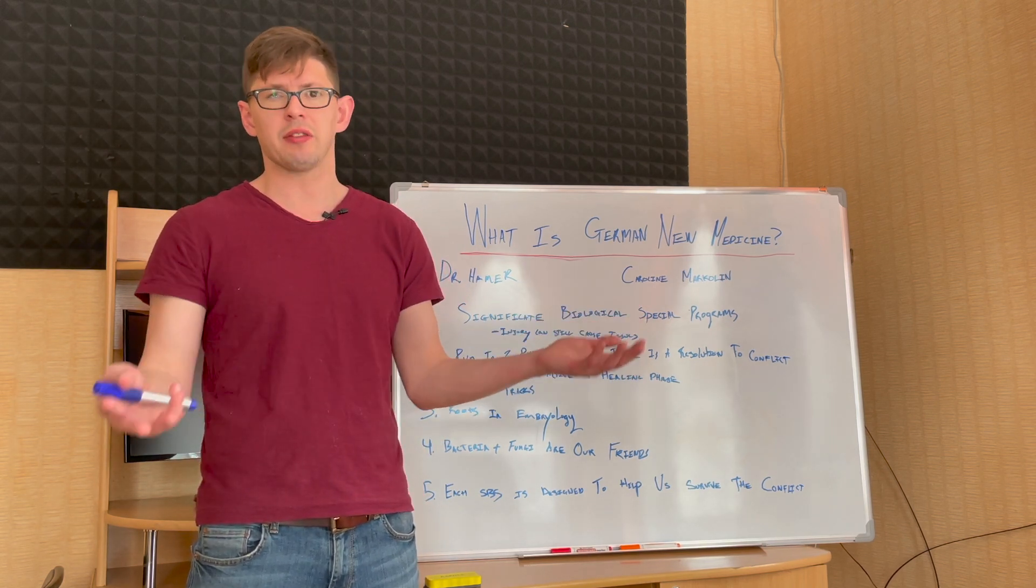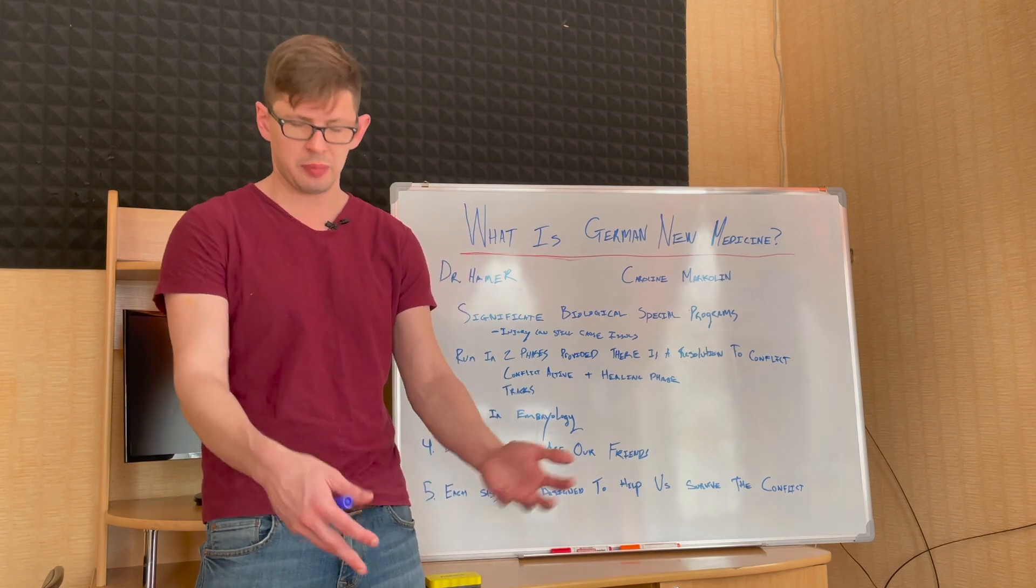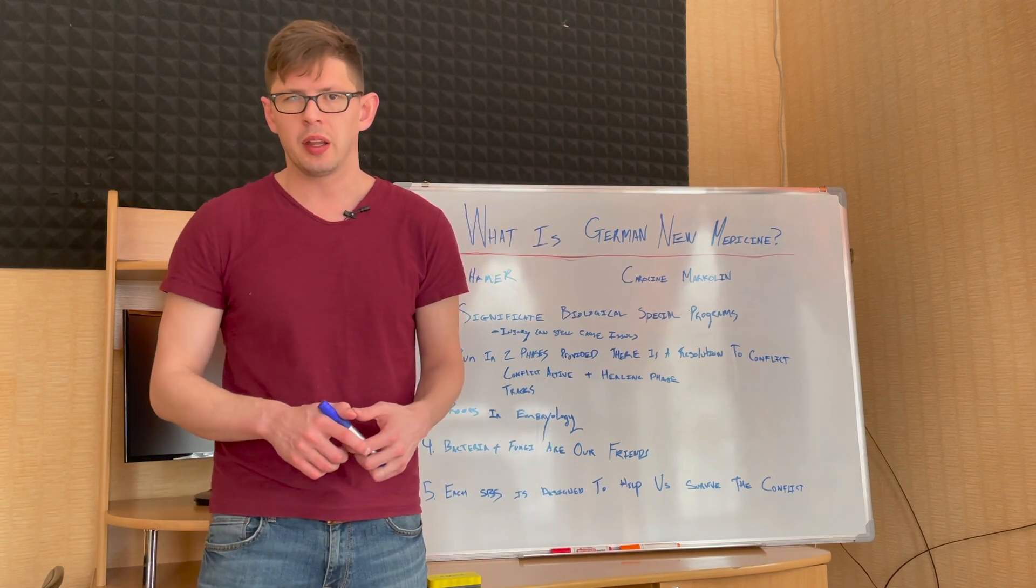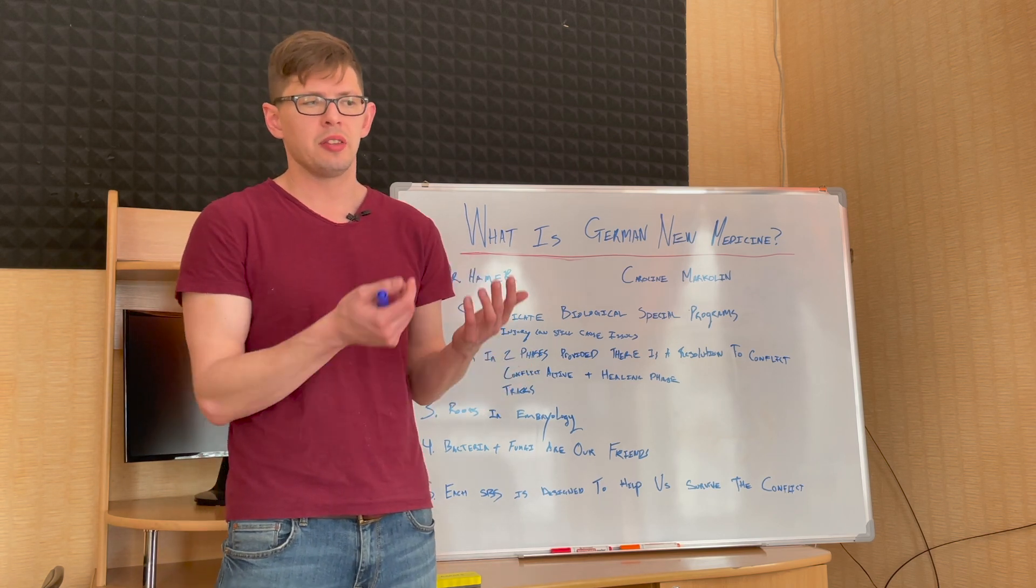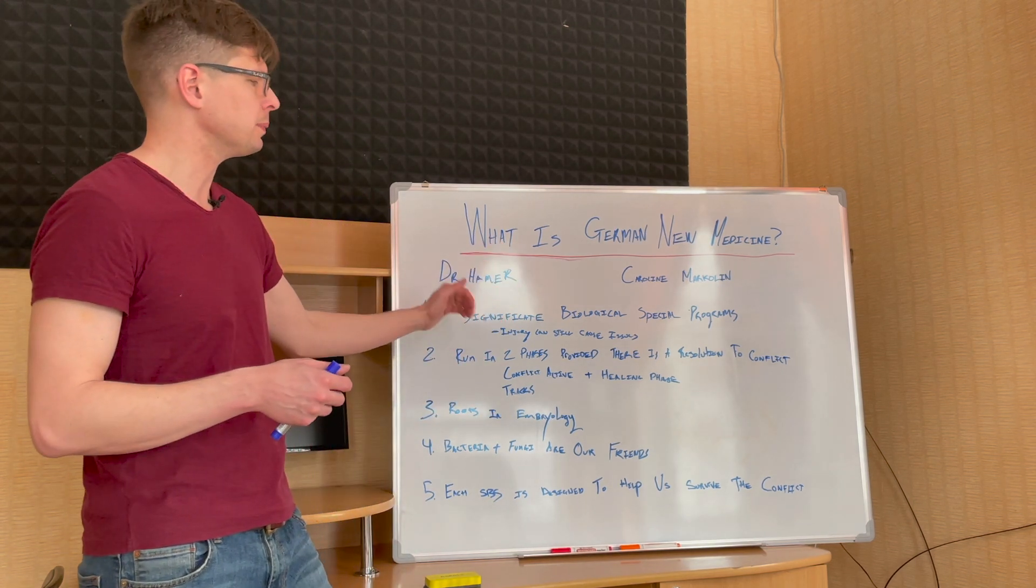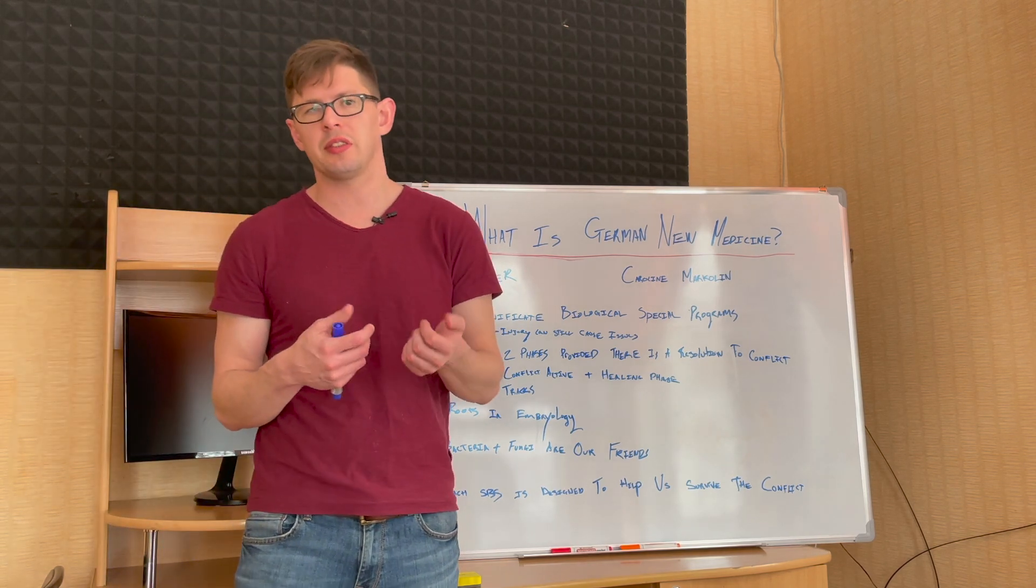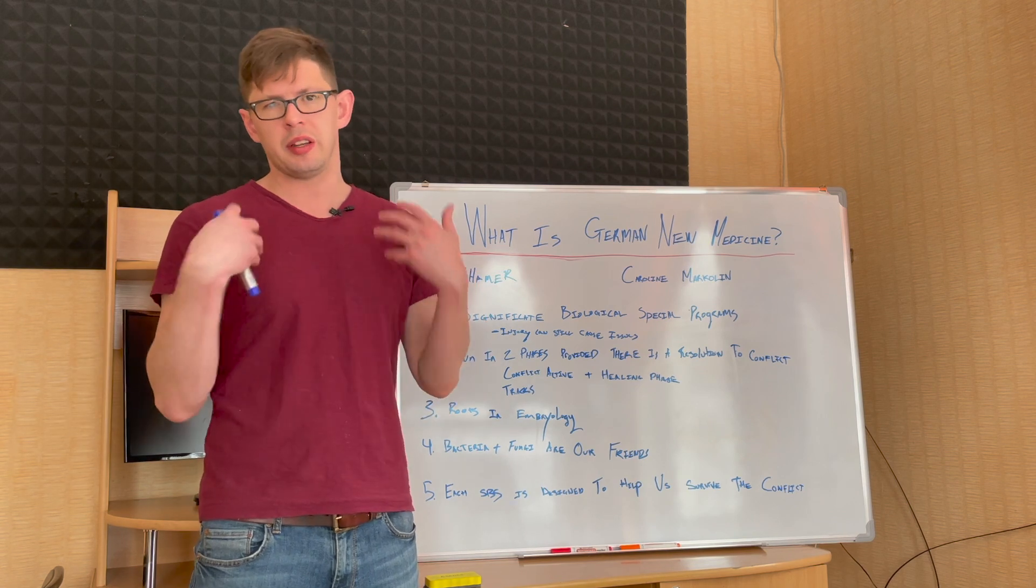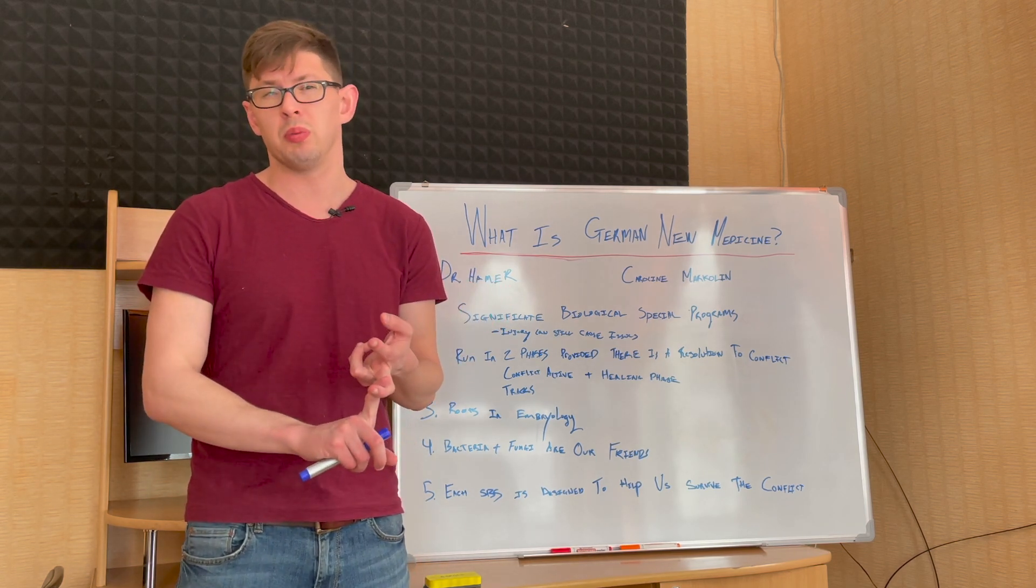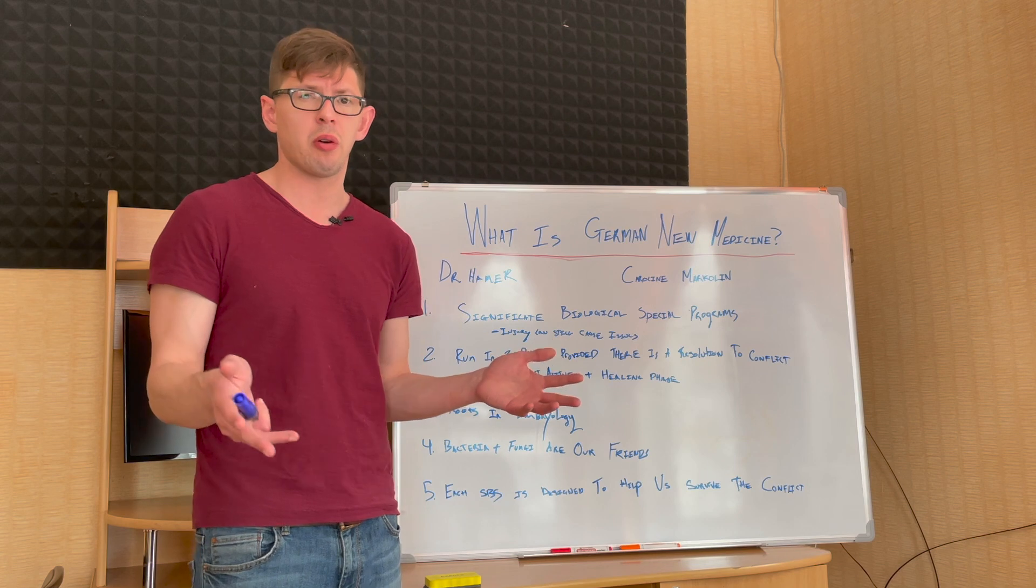The organ that is associated with that type of conflict is the testicles. His son was taken from him, so the body adapts with that by, you know, doing something with the testicles - making more sperm so you can have a better chance creating another offspring. All these diseases are designed to help you survive this conflict. These special biological programs either respond with cell proliferation or cell removal and vice versa. That's really how it works.